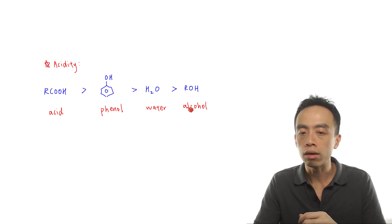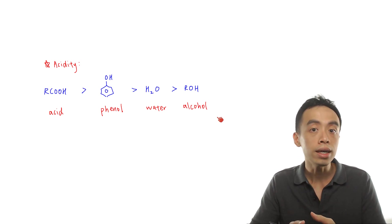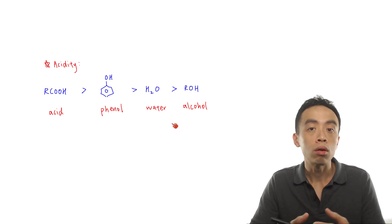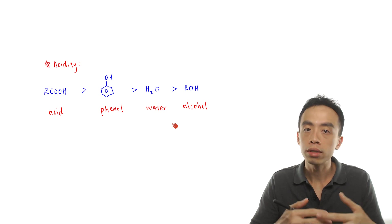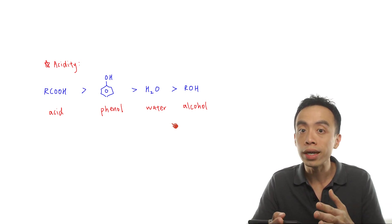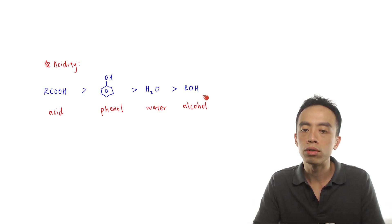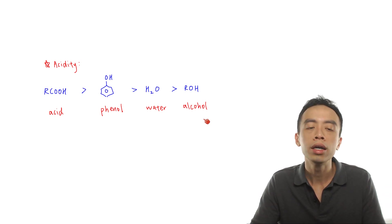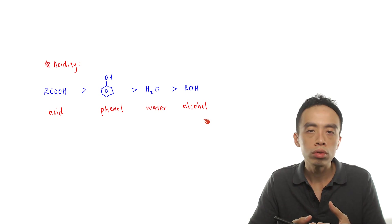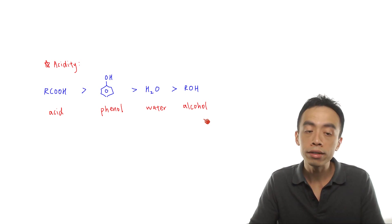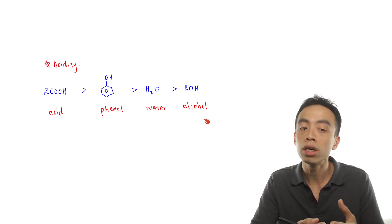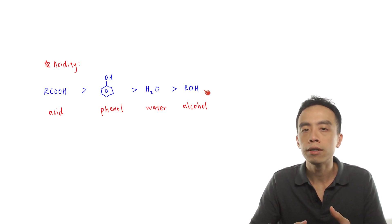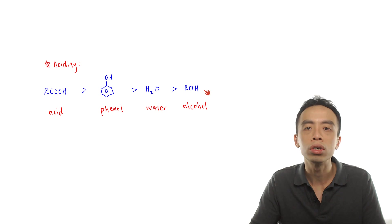If alcohol is less acidic than water, then when we dissolve alcohol in water, alcohol is not able to dissociate its H+, because it is a weaker acid than water. So when alcohol is dissolved in water, the solution is neutral — alcohols are neutral. In order to explain the acidity, we have to look at the conjugate bases for each of these weak acids and consider the stability of their conjugate bases.